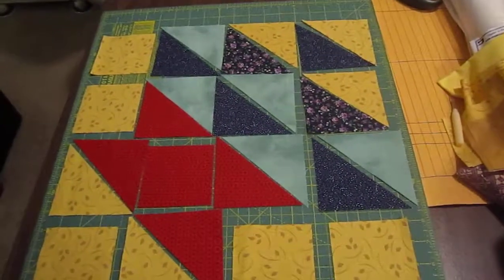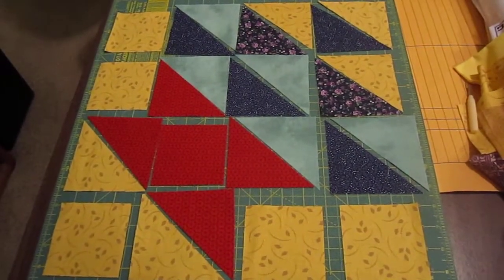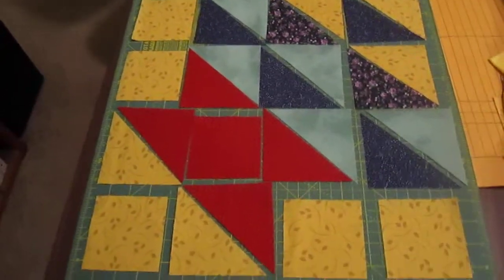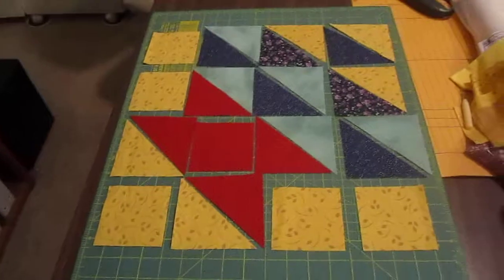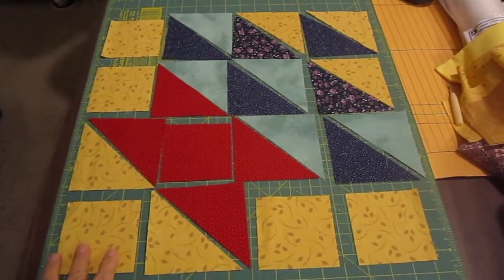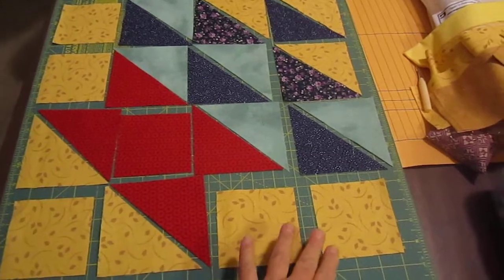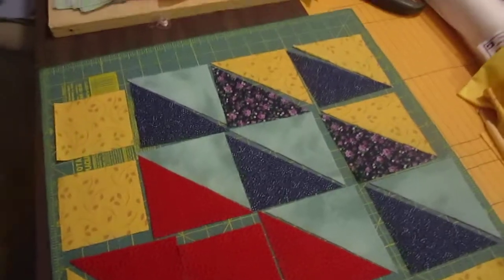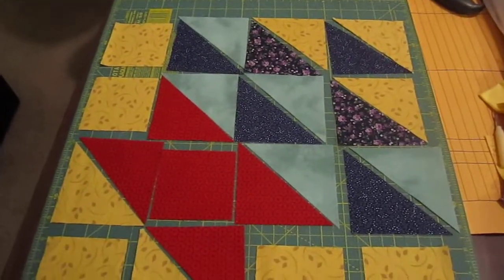This is block two, Flower Basket, and we'll look at the parts that we have going here. We're going to have five three-and-a-half-inch squares of one color. Here's the five squares.